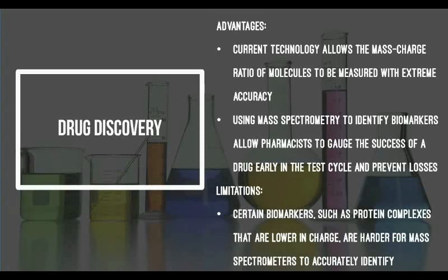Of course, mass spectrometry is not without its limitations. One such disadvantage is that certain biomarkers, such as protein complexes that are lower in charge, are harder for mass spectrometers to identify, meaning that certain structures may be recorded as absent or unaccounted for in early test runs of the drug.